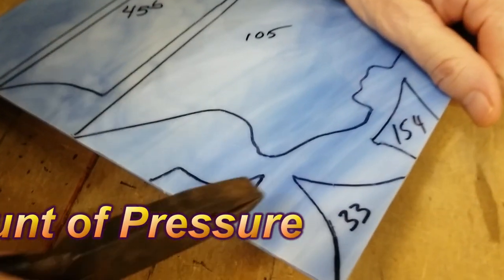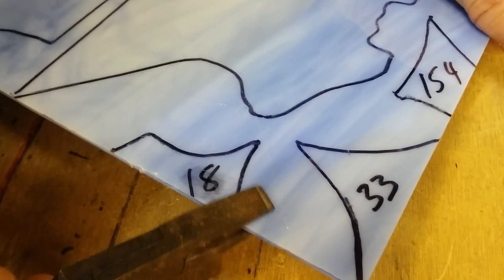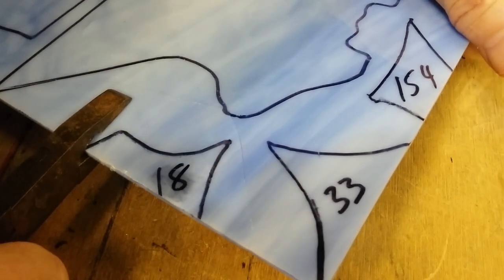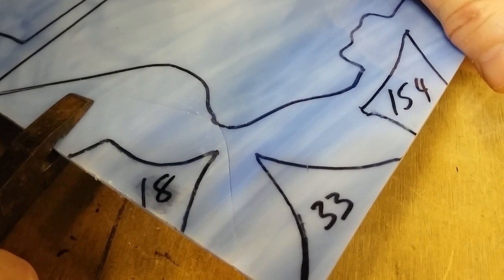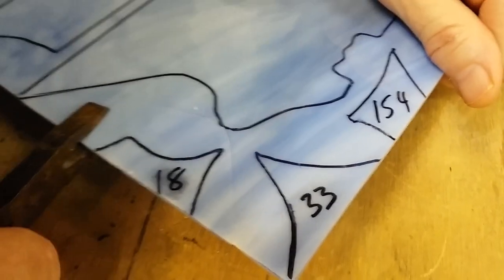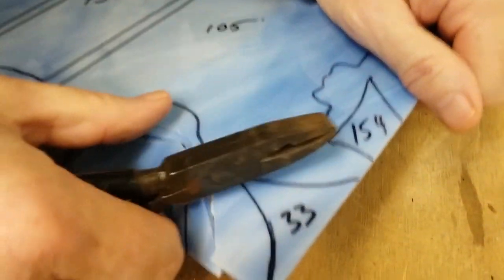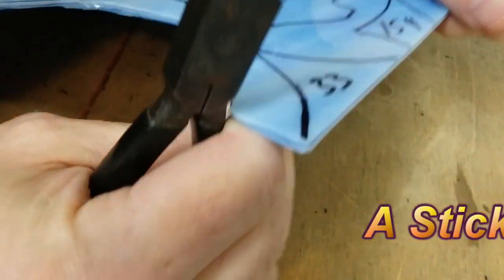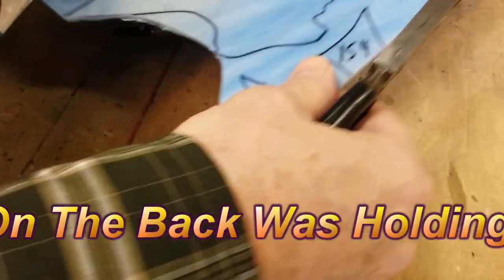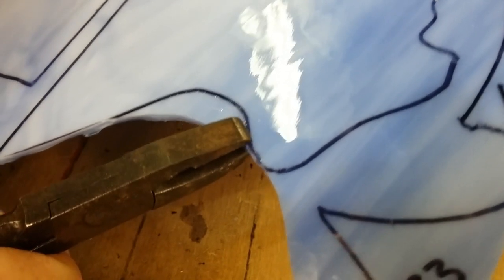You can see it's actually cracked right along here. That time you could even hear it. It wasn't coming because I had a piece of paper on the other side. So now I've got that piece out and you can see my little score relief cuts. It's a lot like grozing.